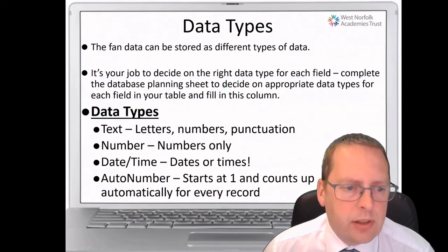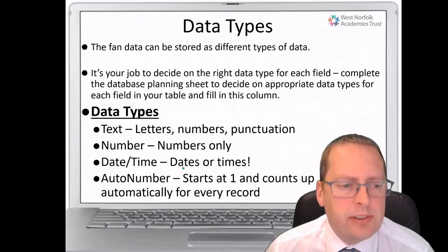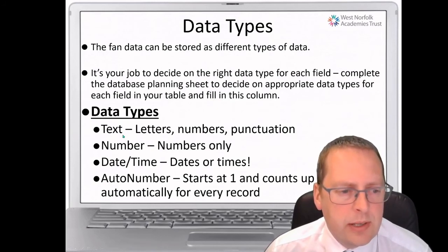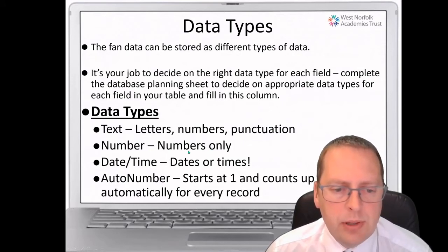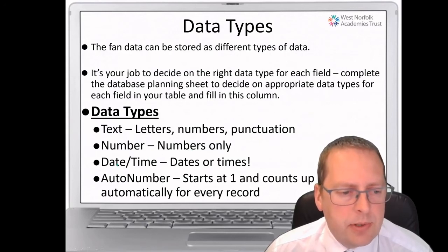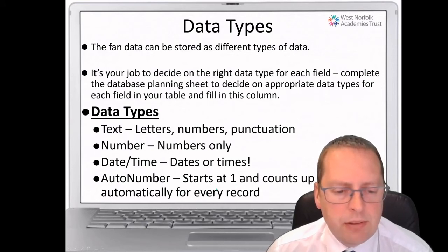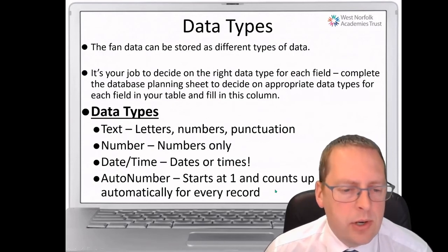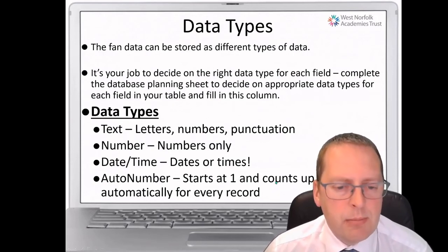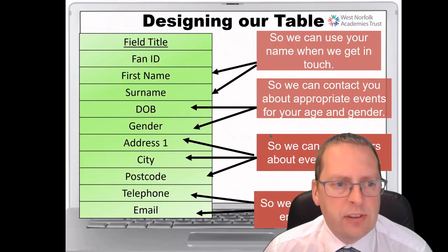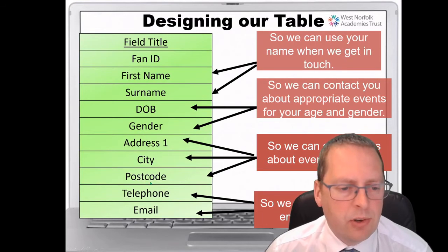For each one of these data types, you need to decide whether the information is going to be text — letters, numbers, and punctuation — whether it's a number (numbers only that you can add up), date and time for dates or times, or auto number, where every record you put in automatically creates a unique incrementing number. You need to work out which data type is most appropriate for each field name.